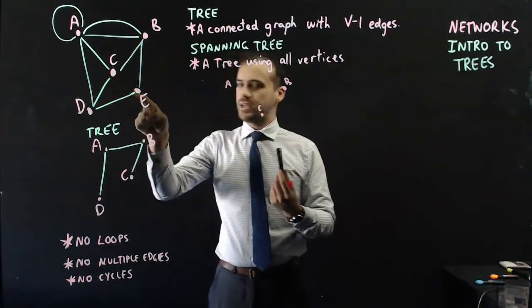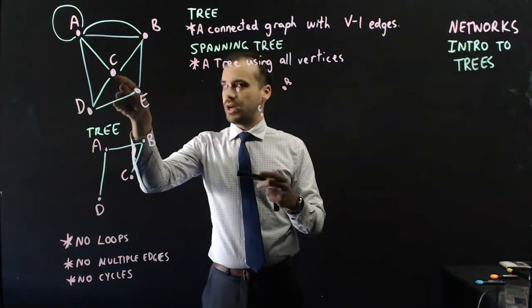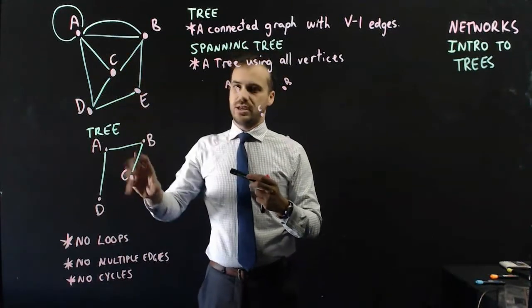So for instance, I can't connect C to E because there's not currently an edge between those. So I can only use the currently existing edges.